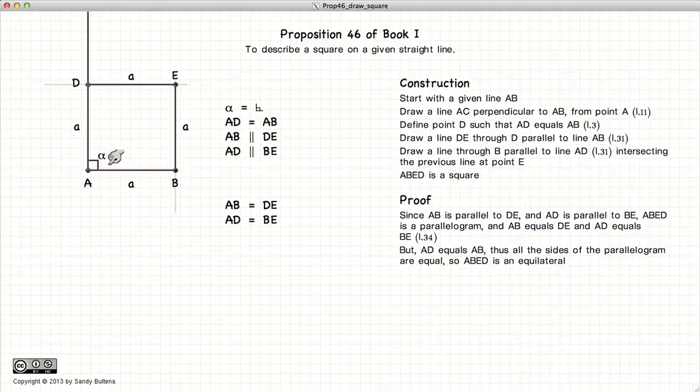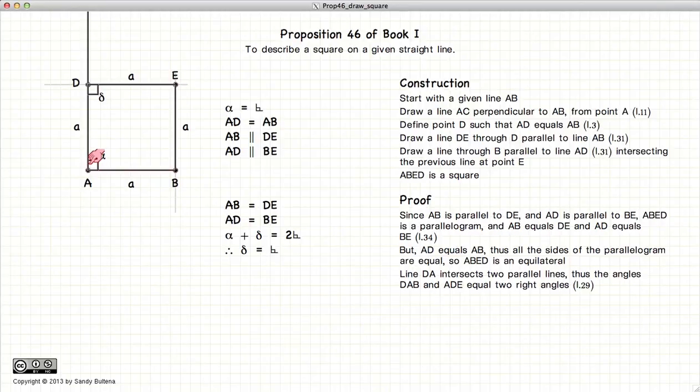Now if we look at the lines AB and DE, they are parallel lines. We have another line crossing through it. So the sum of the interior angles has to equal two right angles. Well, since we already have one of the interior angles equal one right angle, this angle must also be a right angle.